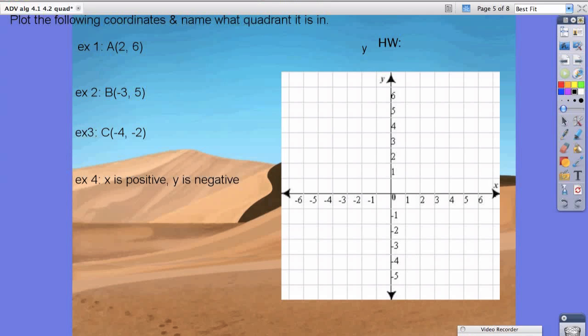Let's try plotting a few points and naming what quadrant it's in. Example 1 is 2, 6. So we are going to start off at the origin, so right at the center. Your x value is 2, positive 2. That means 2 to the right. So 1, 2. And because your y value is 6, you're going to move up 6. 1, 2, 3, 4, 5, 6. And we're going to call that point A.